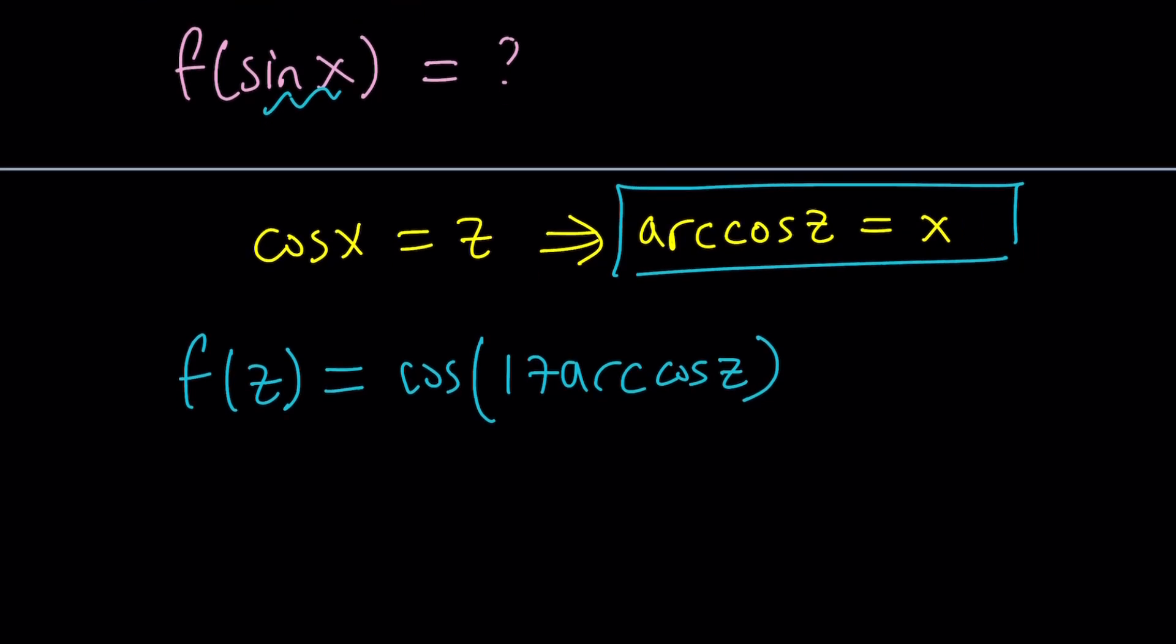Because we can do it. So, f(sin x) is going to be cos(17 arccos(z)), which is sin x. Okay.